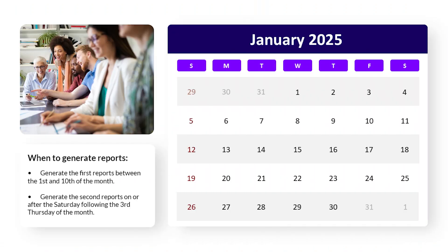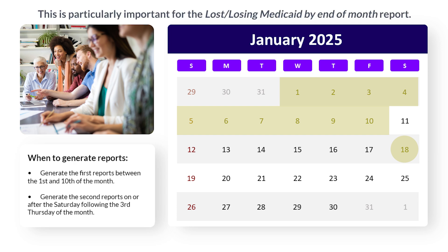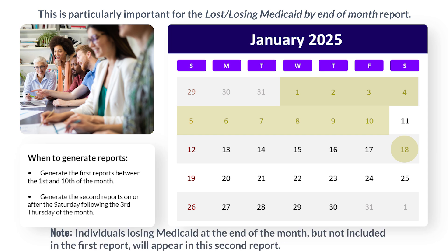Generate the first reports between the 1st and 10th of the month. Generate the second reports on or after the Saturday following the third Thursday of the month. For example, if the third Thursday is the 16th of the month, generate the second reports on or after Saturday the 18th. This is particularly important for the Lost/Losing Medicaid by End-of-Month report, as individuals losing Medicaid at the end of the month but not included in the first report will appear in the second report.